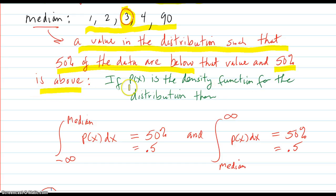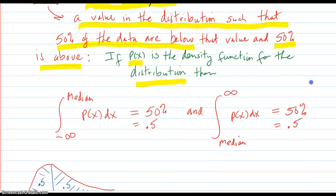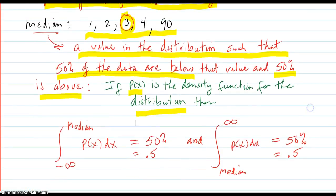So let's say you have a p of x density function for the distribution. Then, if you add up all the area from negative infinity up to the median, you should get 50%, or 0.5.